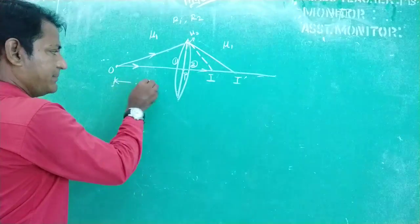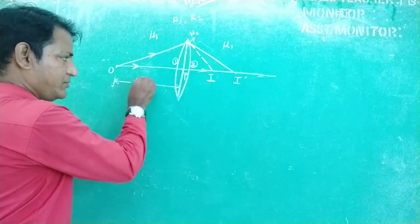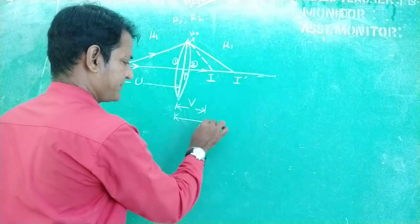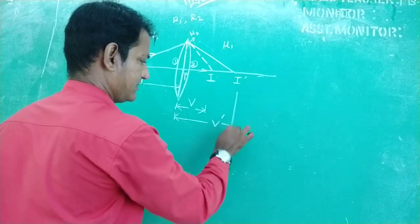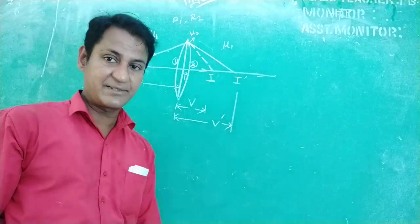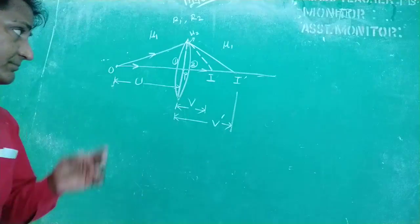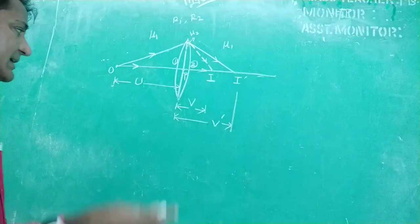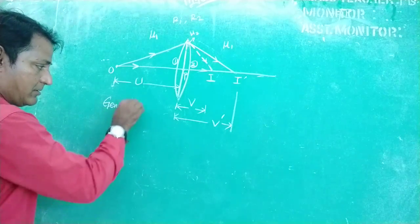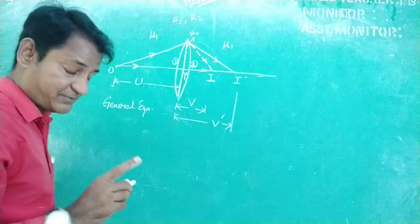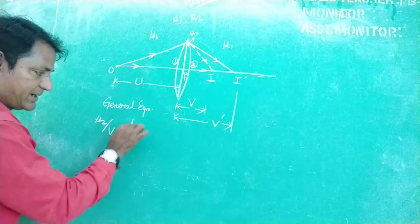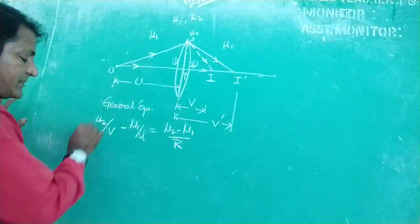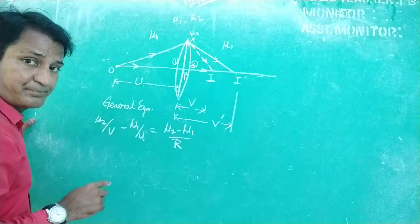The distance between O and P is taken as U (the object distance), the distance between P and I-dash is taken as V-dash (the intermediate image distance), and the distance between P and I is taken as V (the final image distance). Now let us use the general equation of refraction at spherical surfaces: mu2/V minus mu1/U equals (mu2 minus mu1) divided by R.